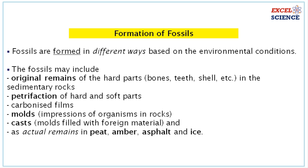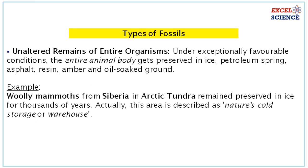Other formation types include petrification of hard and soft parts, carbonized films, molds — that is impressions of organisms in rocks — casts (molds filled with foreign material), and actual remains preserved in peat, amber, asphalt, and ice. Land animals may also get fossilized in amber (hardened resin), asphalt (hardened tar), volcanic ash, peat bogs, sand deposits, or in ice.